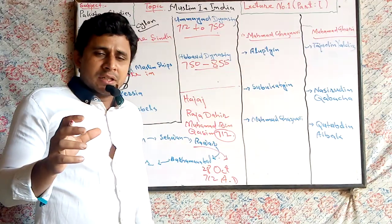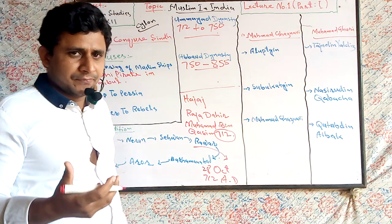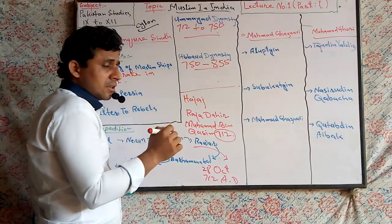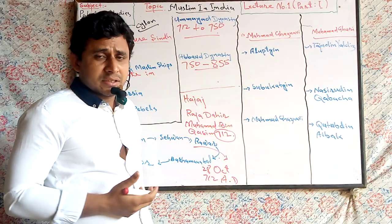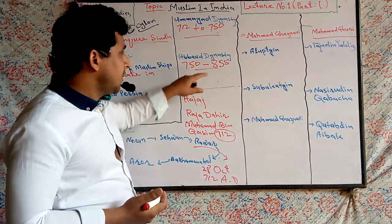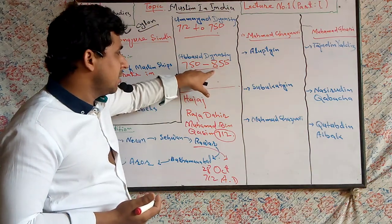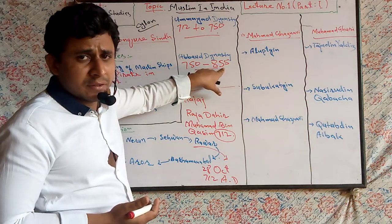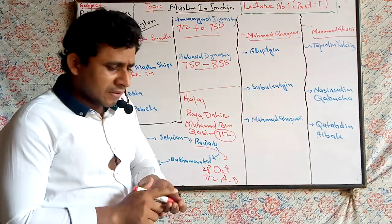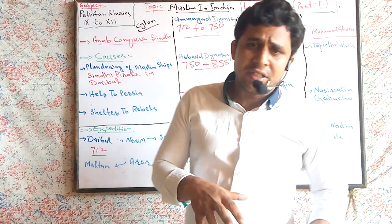Sindh became part of Abbasid Dynasty. There were 31 governors appointed in this dynasty in Sindh. And after 855, Muslims of Sindh became independent and divided into petty and small states.